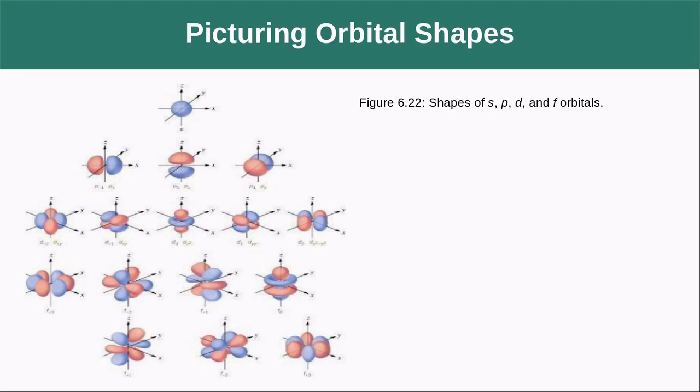For the p orbitals with ℓ=1, we go from -ℓ to +ℓ. At mℓ=-1, we have the px orbital; at mℓ=0, we have the py orbital; and at mℓ=+1, we have the pz orbital. The number of mℓ values is the number of orientations that orbital can take on. Here we see the five d orbitals and all seven f orbitals.